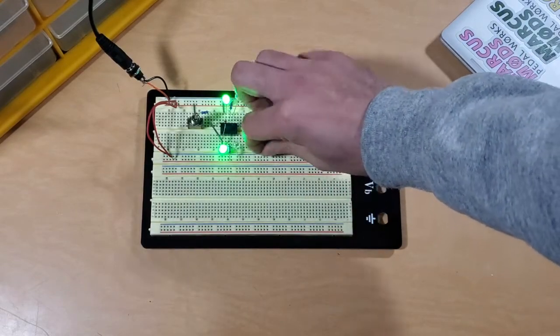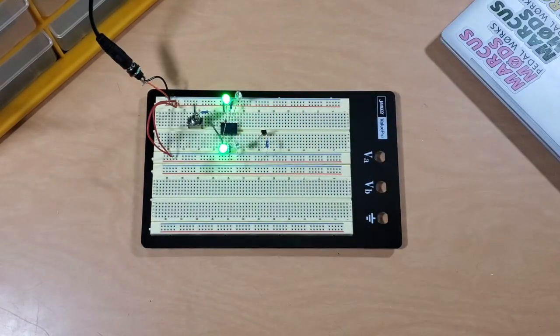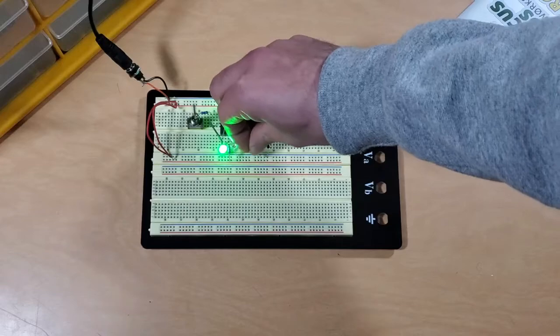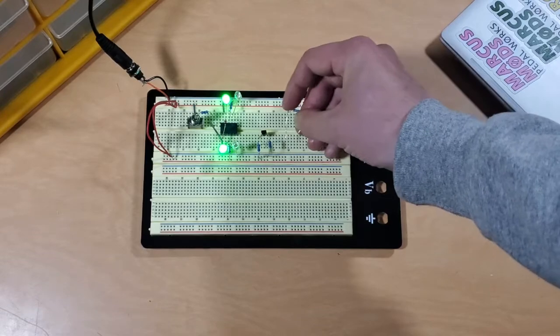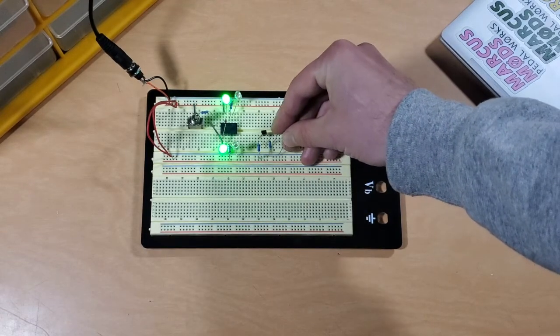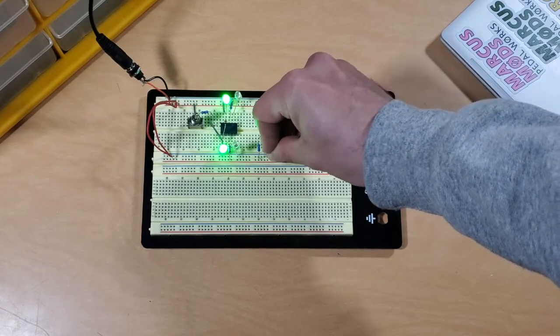From there, we'll need to add our 1K resistors from gate to ground and from source to ground. And then after we've got those connected, we'll need to add our 10K resistor from our plus 9V rail to the drain on our JFET.